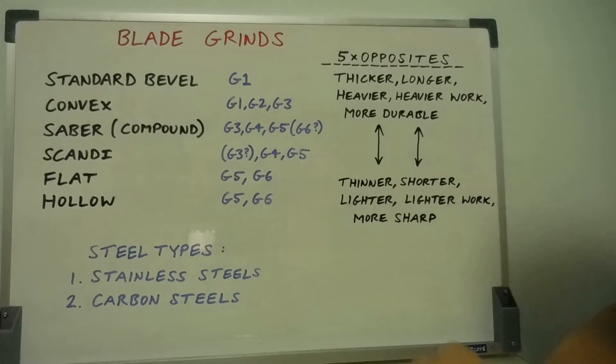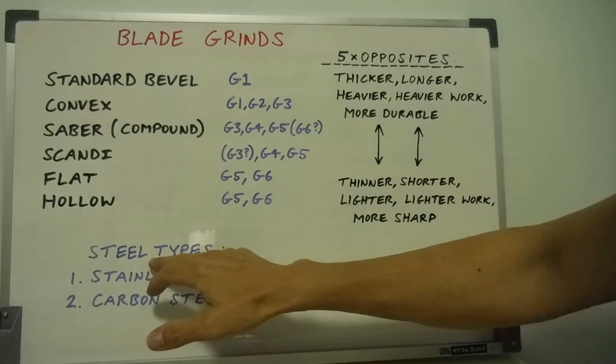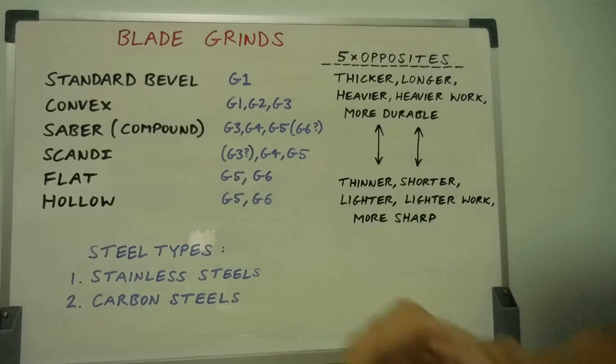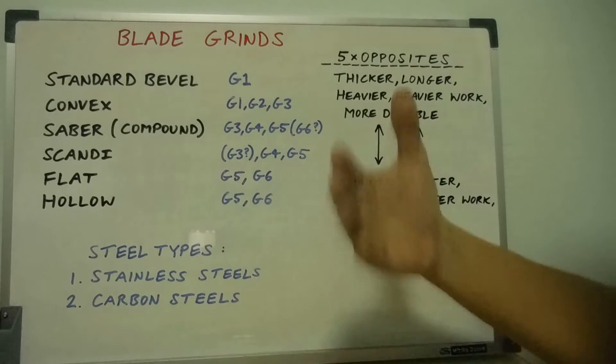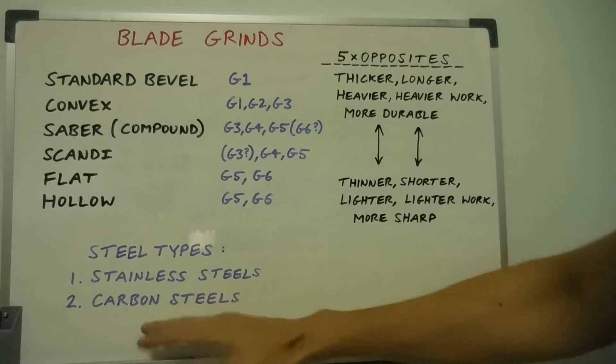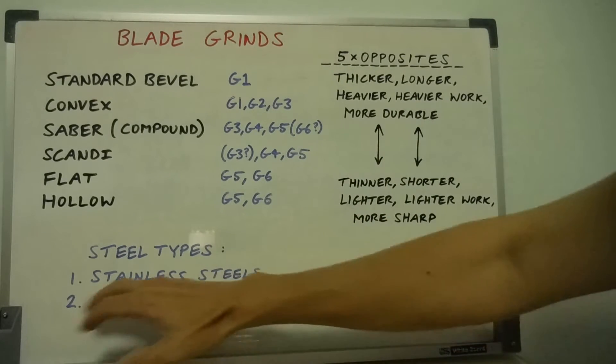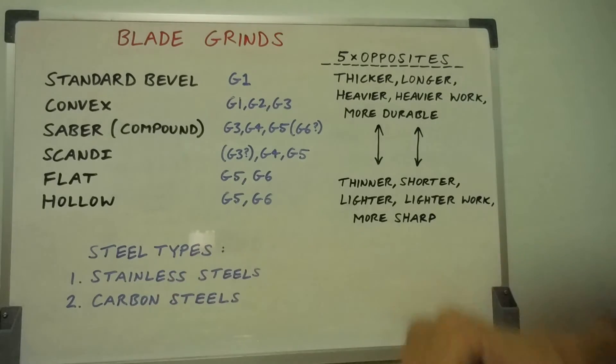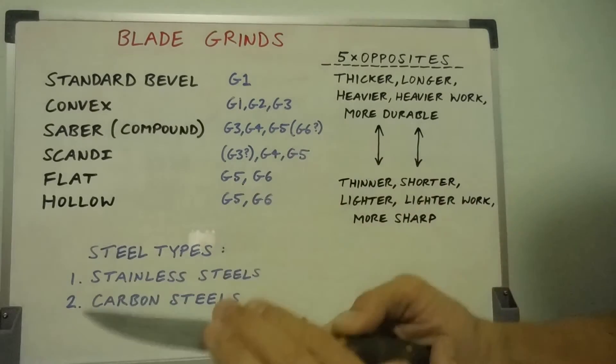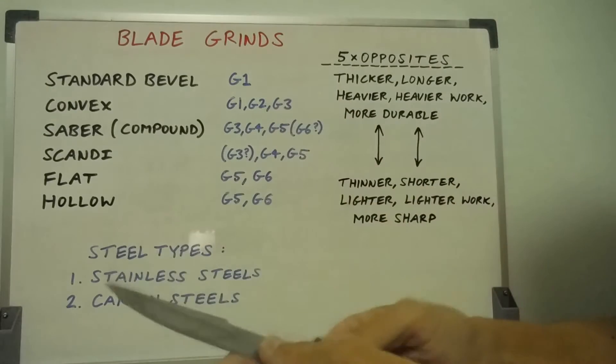And the last point that I want to make very quickly is about steel types. It's another big subject, controversial subject. There's many more steel types, but this is just a quick overview. There's two main steel types in my mind, stainless steels and carbon steels, high carbon steels, and stainless steel knives, which I actually prefer.